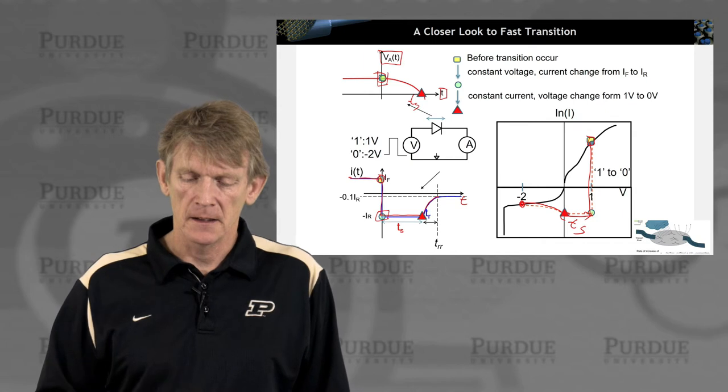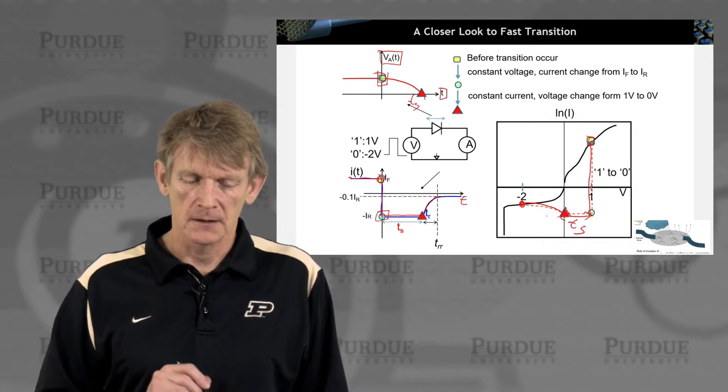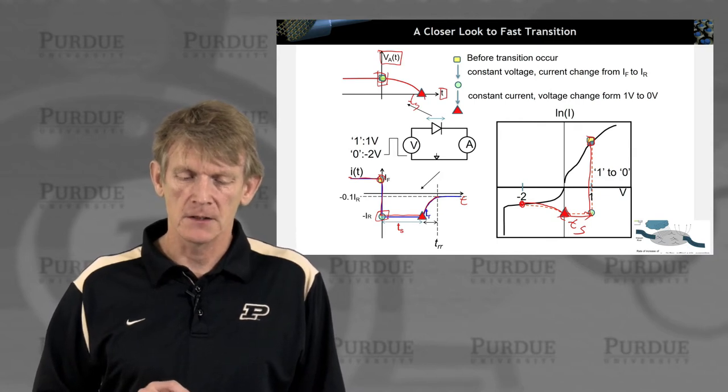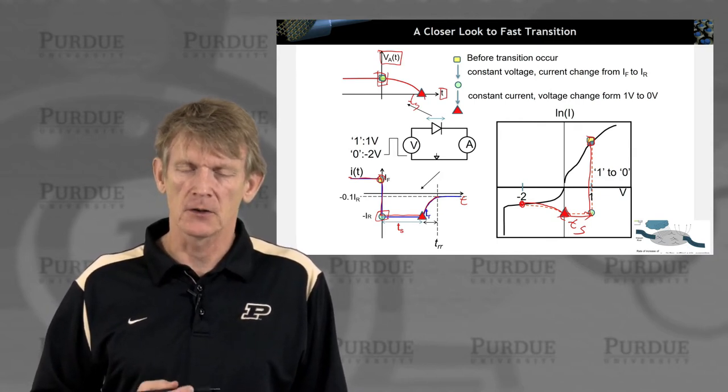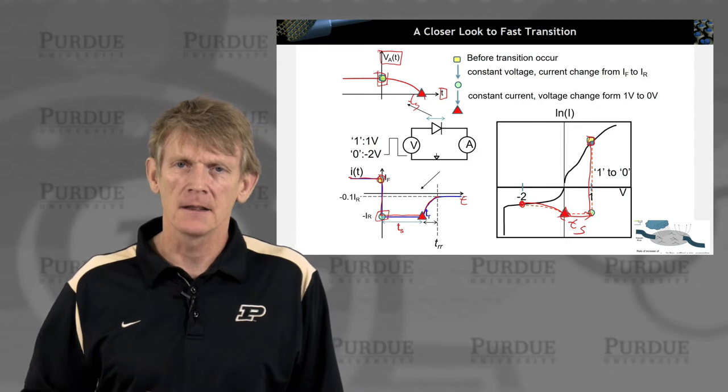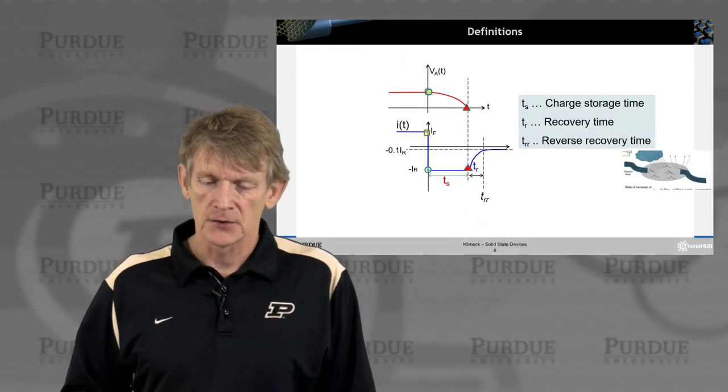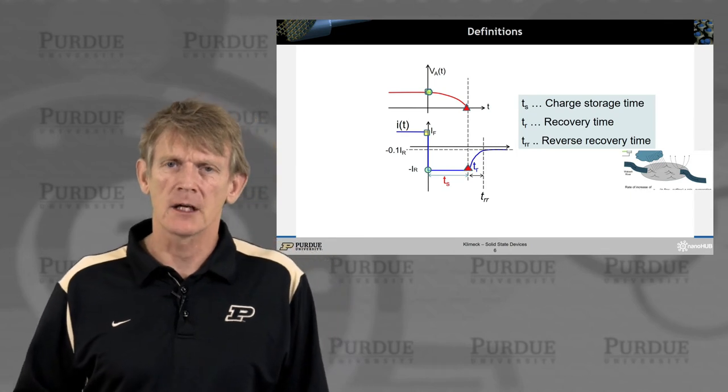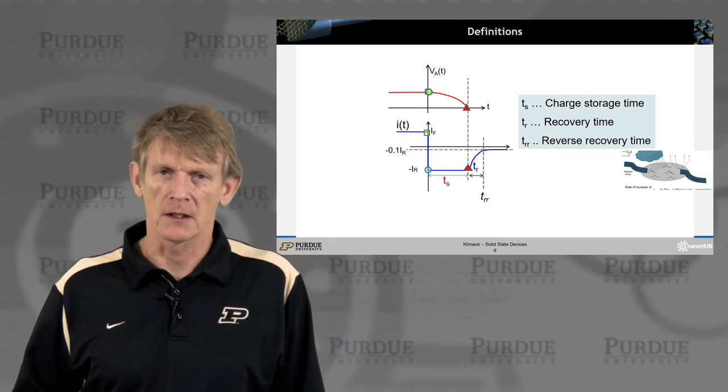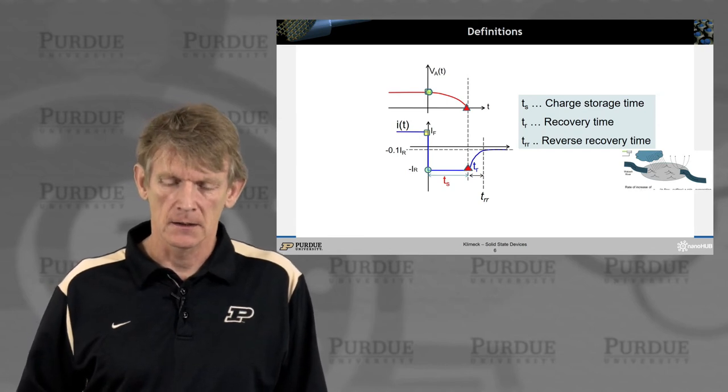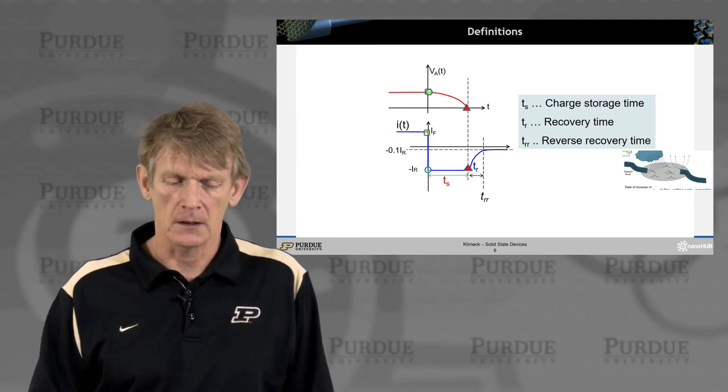And then eventually we reach, after time Ts, storage time, we reach, keep the constant, a current constant, and then change the voltage slowly. So we have a storage time, a recovery time, and a reverse recovery time. And we'll go through these times and calculate those in a model that is called a charge control model.